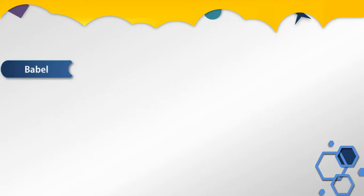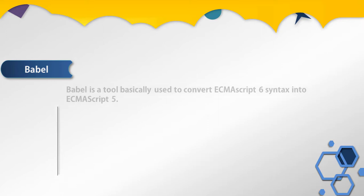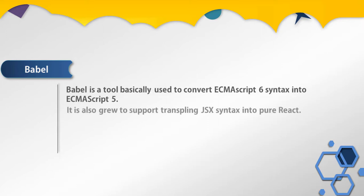Babel is a tool basically used to convert ECMAScript 6 syntax into ECMAScript 5. It is also used for transpiling JavaScript XML syntax into pure React.